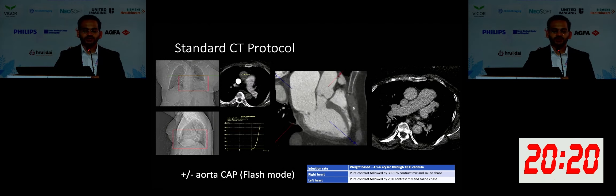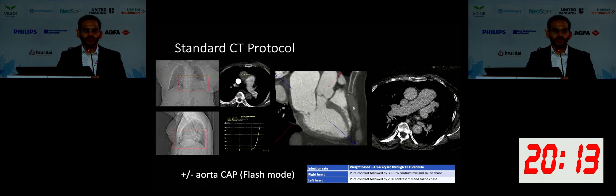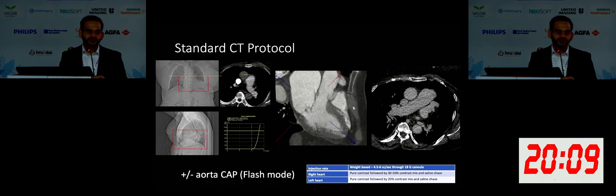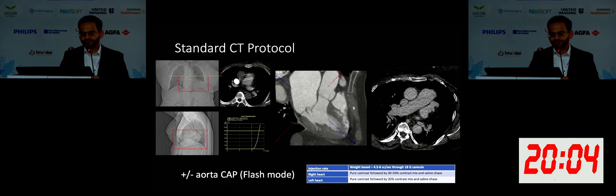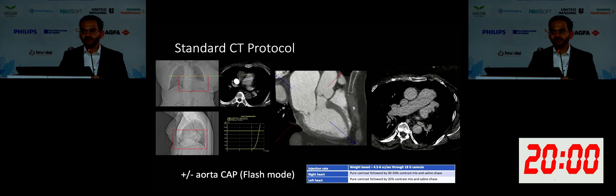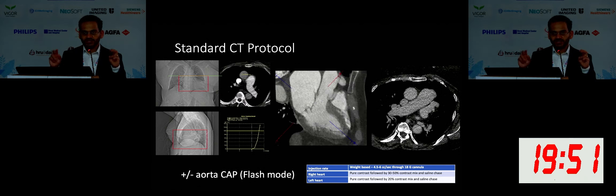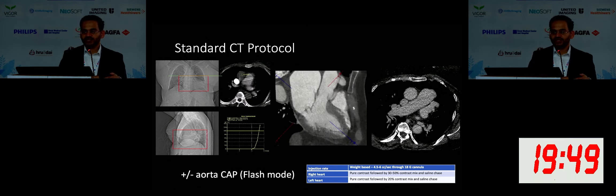I just showed you an example of a reconstructed three-chamber view. We do acquire delayed images because many times you end up catching incidental findings, like thrombus, and the left atrial appendix sometimes doesn't fill. So it's important to obtain that. For injections, we follow a weight-based approach. We have a system that automatically decides the rate of injection for the patient's body habitus, calculated based on the weight. Generally, it is somewhere between 4 and 6 cc per second.